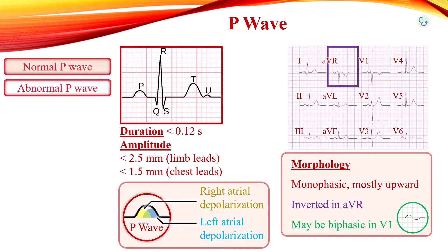Early right atrial activities are directed towards V1, giving rise to an initial positive deflection, followed by left atrial activity directed away from V1, producing a later negative deflection. Therefore, in lead V1, the initial positive deflection represents the right atrial depolarization, and the subsequent negative deflection represents left atrial depolarization.